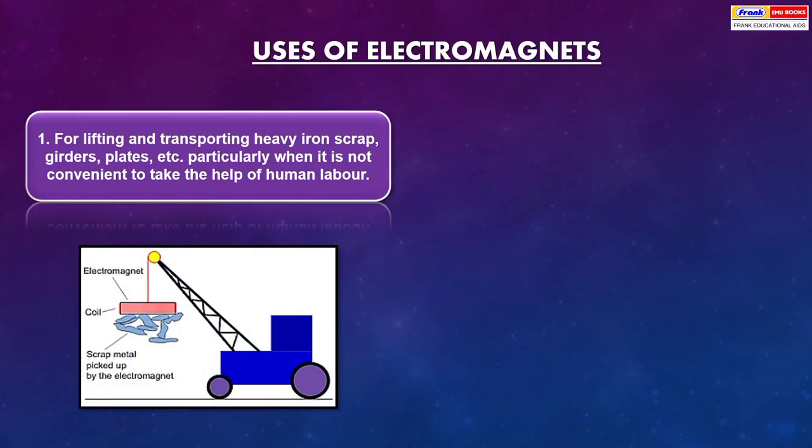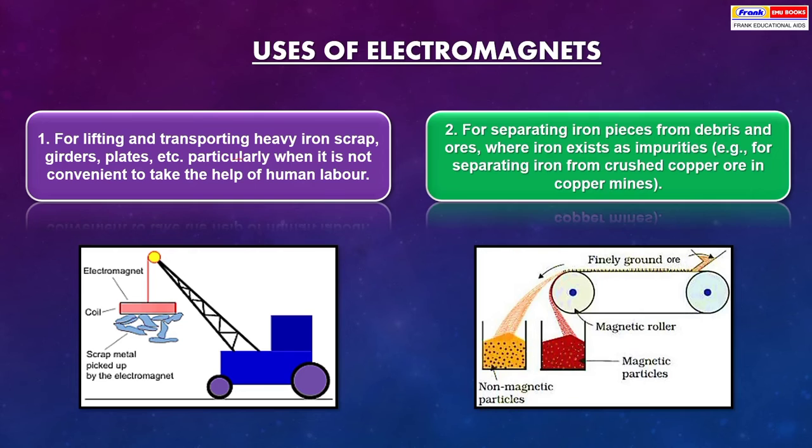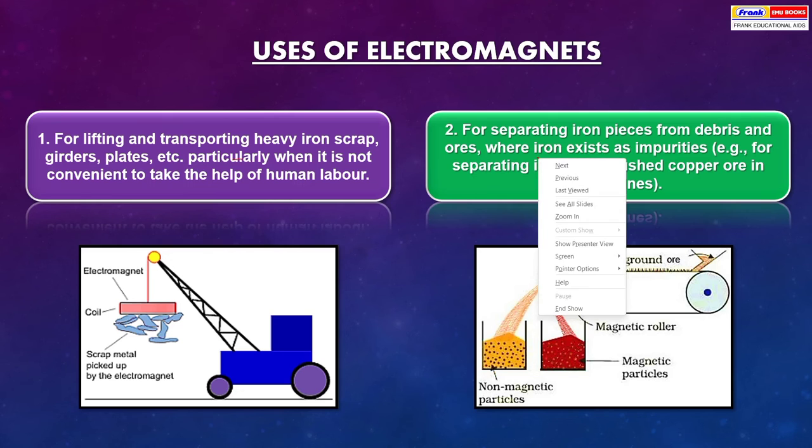Uses of electromagnets: It is used for lifting and transporting heavy iron scrap, girders, plates, etc., particularly when it is not convenient to take the help of human labor. For separating iron pieces from debris and ores where iron exists as impurities, these are some uses of electromagnets.